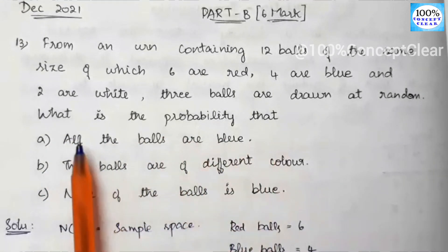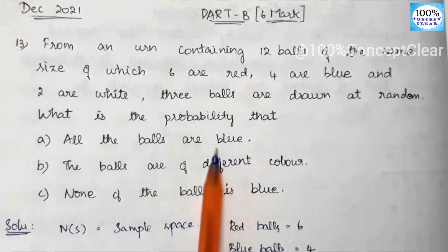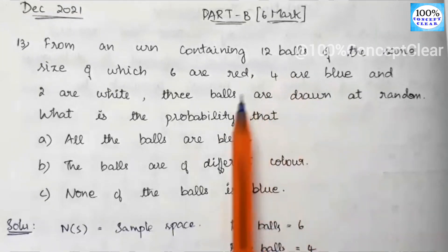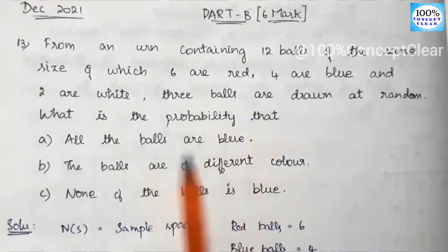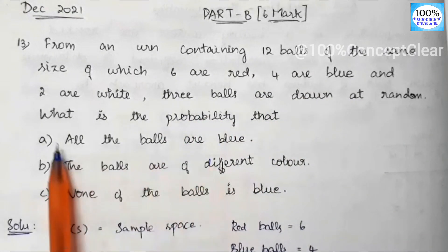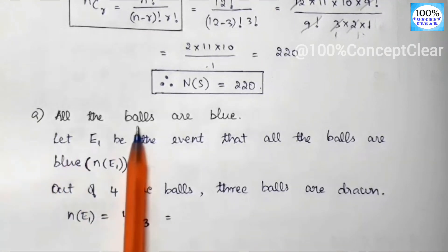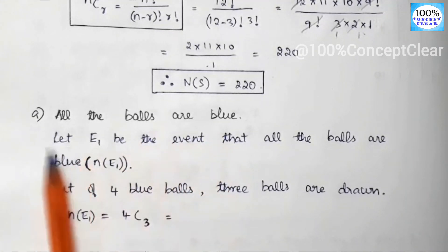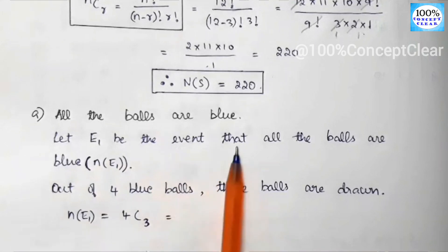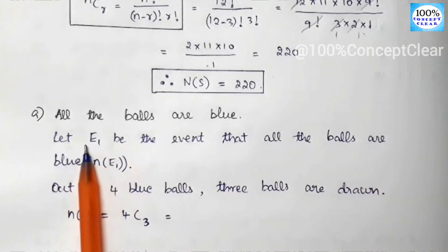Now we solve Part A: what is the probability that all the balls are blue? We need 3 balls drawn and all are blue. Let E1 be the event that all the balls are blue.